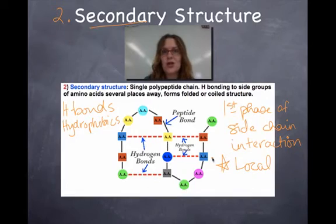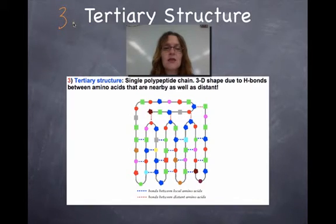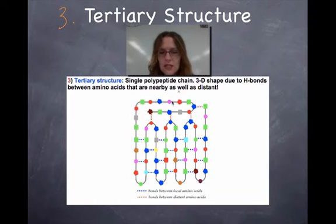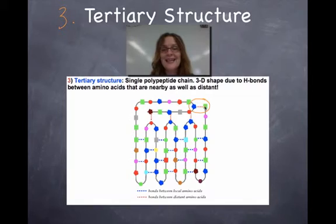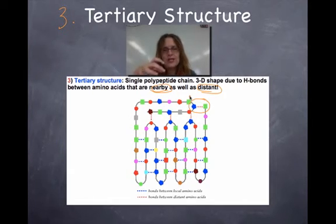The next level is called tertiary structure. Tertiary refers to the third level of structure. This is very similar to the second, but we're looking at hydrogen bonds taking place far away on the chain. This amino acid at one end of the polypeptide chain is actually forming a chemical interaction with an amino acid almost at the other end of the chain — H bonds between amino acids that are nearby and distant.